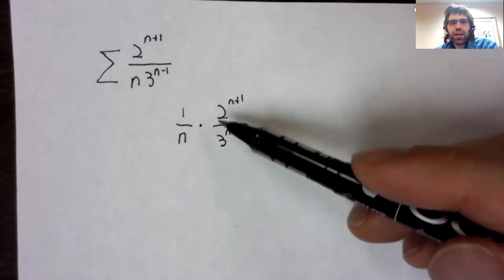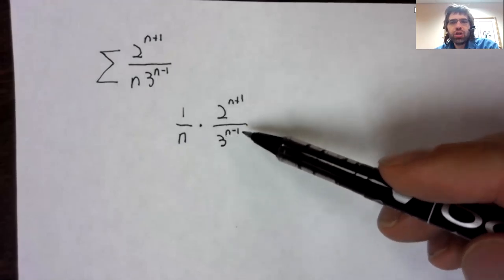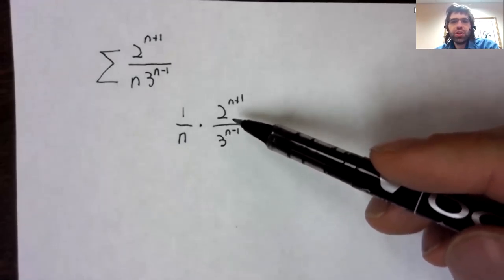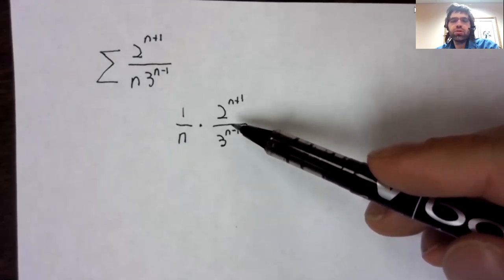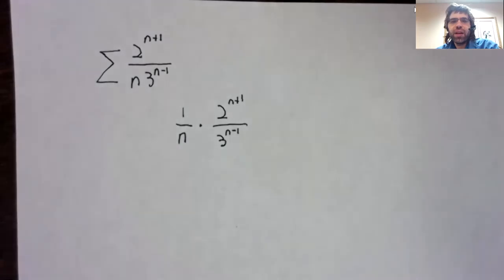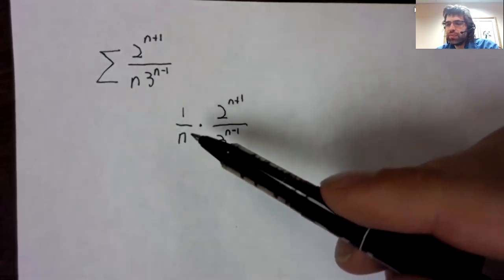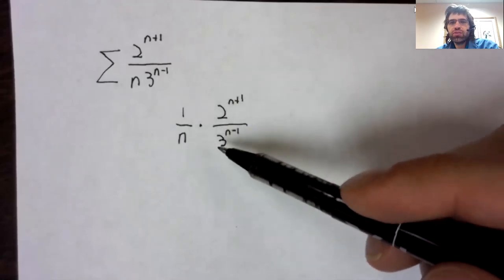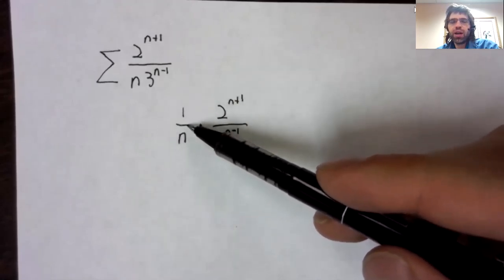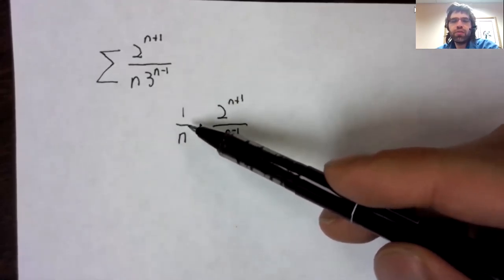And I think that this looks really close to the geometric series two thirds to the n, and two thirds to the n converges.